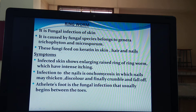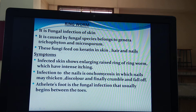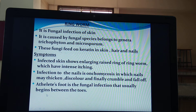If this infection is in the nails, it is called onychomycosis, where the nails may thicken, become discolored, and if the infection is severe, the nails become crumble and fall off. If the infection is in the foot region, the disease is called athlete's foot — a fungal infection generally seen in between the toes, beginning in the toes region. These are the symptoms seen on the skin, nails, and foot region.